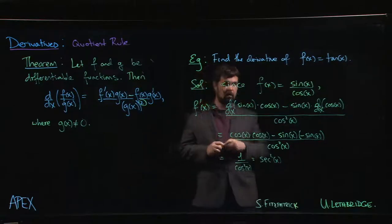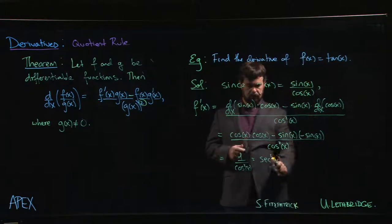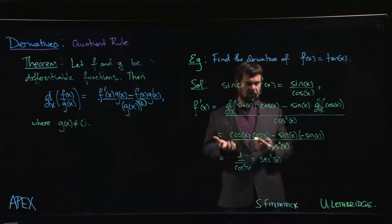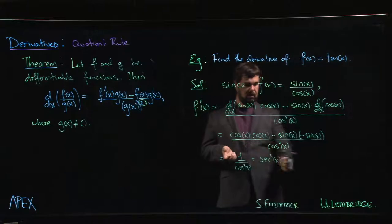The derivative of tan x is secant squared, which is a fairly nice result. It's certainly a lot nicer than the mess that you have here.